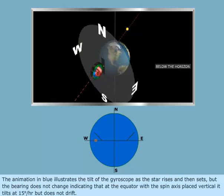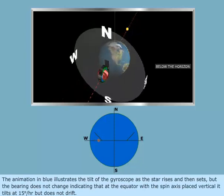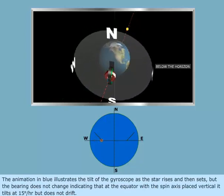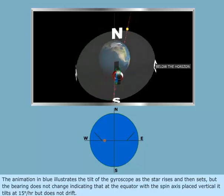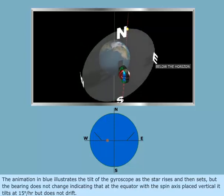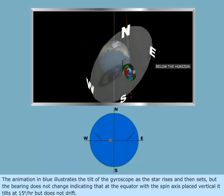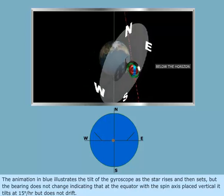The animation in blue illustrates the tilt of the gyroscope as the star rises and then sets, but the bearing does not change, indicating that at the equator, with the spin axis placed vertical, it tilts at 15 degrees per hour but does not drift.